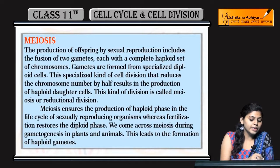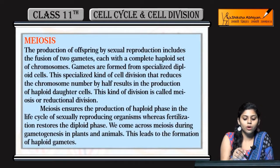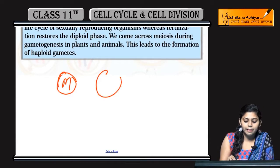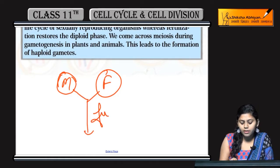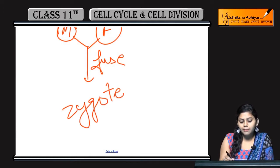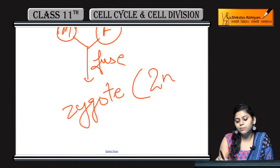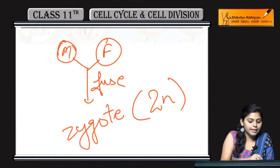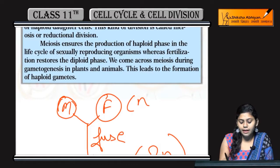We have seen what sexually reproducing organisms are. Male gamete and female gamete fuse together to form a zygote. Now the zygote is diploid, but the male and female gametes are haploid.